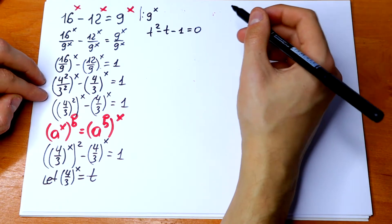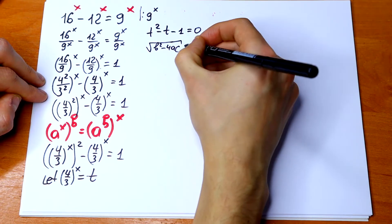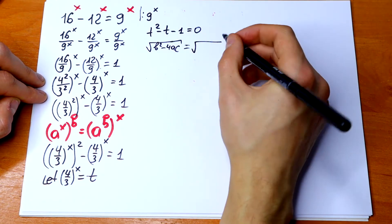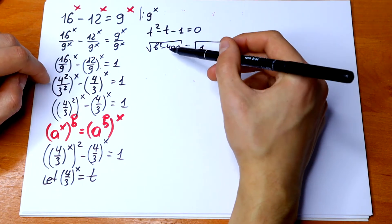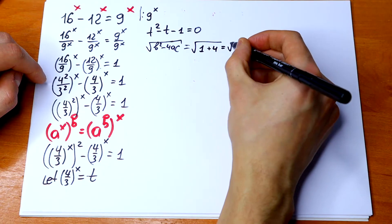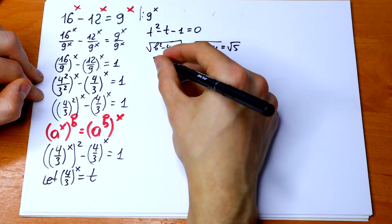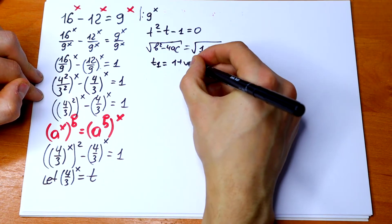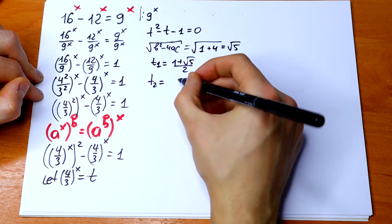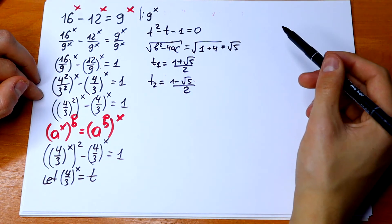Let's solve the quadratic. First, I'll calculate the discriminant: square root of b squared minus 4ac equals square root of 1 plus 4, which equals the square root of 5. So our two solutions are: t1 equals 1 plus square root of 5, all over 2; and t2 equals 1 minus square root of 5, all over 2.